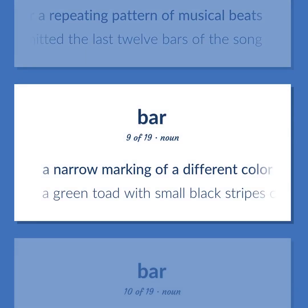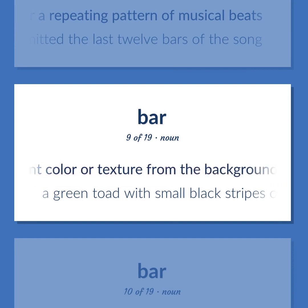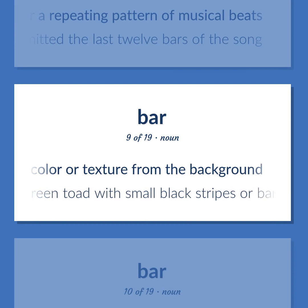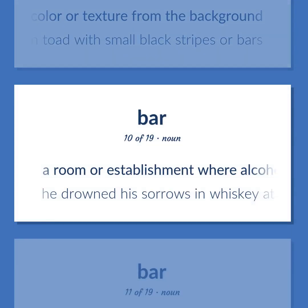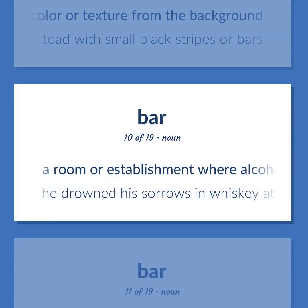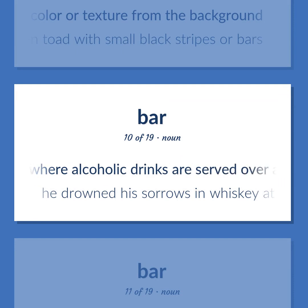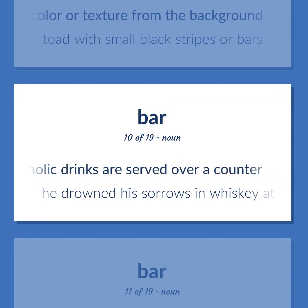A narrow marking of a different color or texture from the background. A green toad with small black stripes or bars. A room or establishment where alcoholic drinks are served over a counter. He drowned his sorrows in whiskey at the bar.